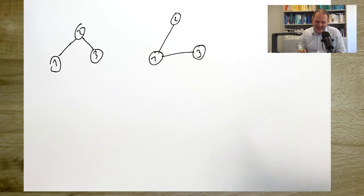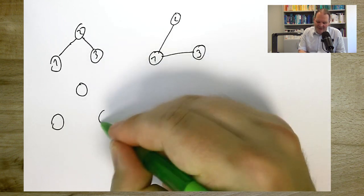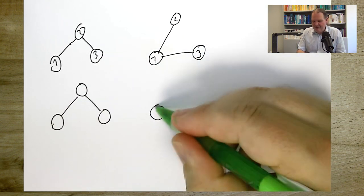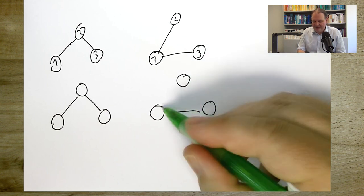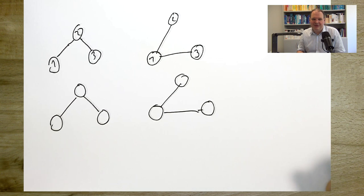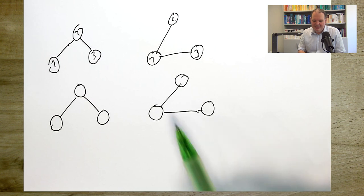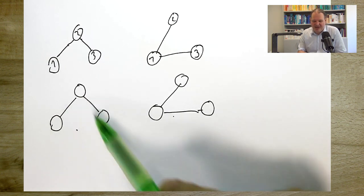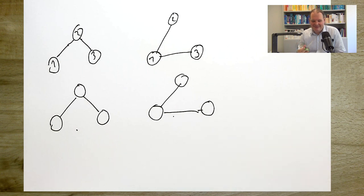But if I do the same thing with unlabeled nodes, it's quite different. Here I have unlabeled nodes, and I connect them like this. Or I have unlabeled nodes, and I connect them like this. And now, because I can't distinguish the nodes, I also can't distinguish these networks. So these are the same unlabeled networks. They are both chains of 3 nodes, and everything else doesn't matter. They have the same topology. And that means there are less unlabeled networks between a given number of nodes than there are networks between the same number of labeled nodes.